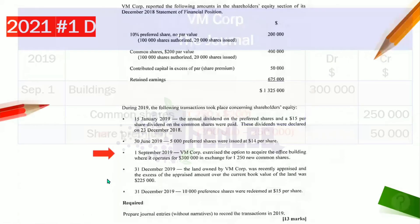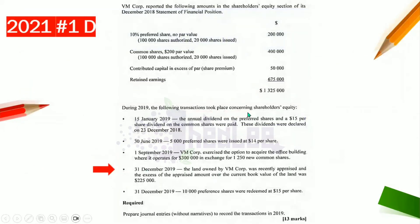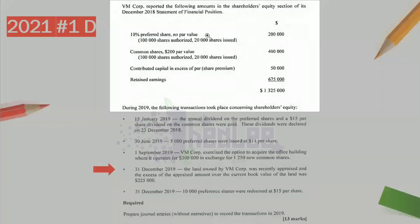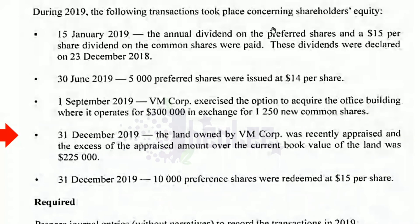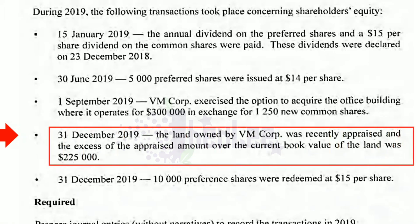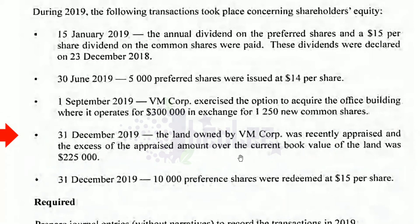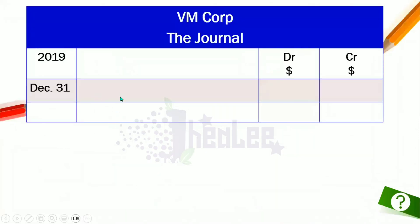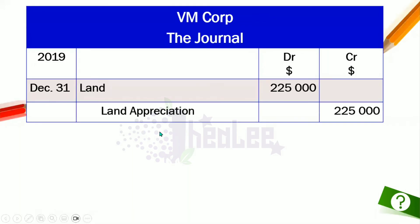December 31, 2019: The land owned by VMCorp was recently appraised, and the excess of the appraised amount over the current book value of the land was $225,000. The journal entry debits land for $225,000 to show the increased value, and credits land appreciation for $225,000.